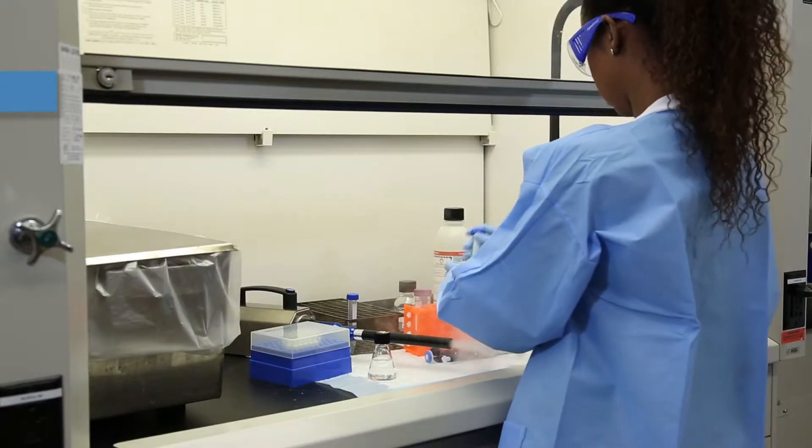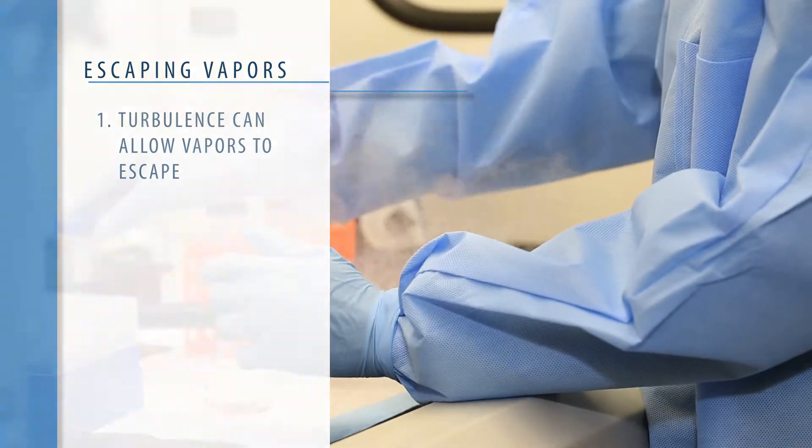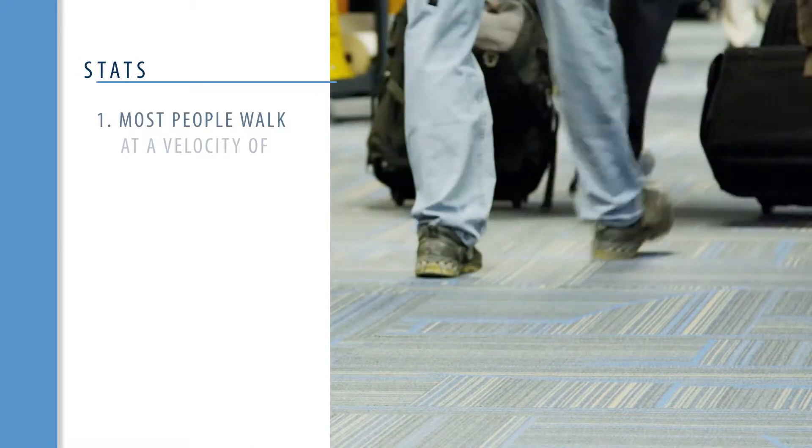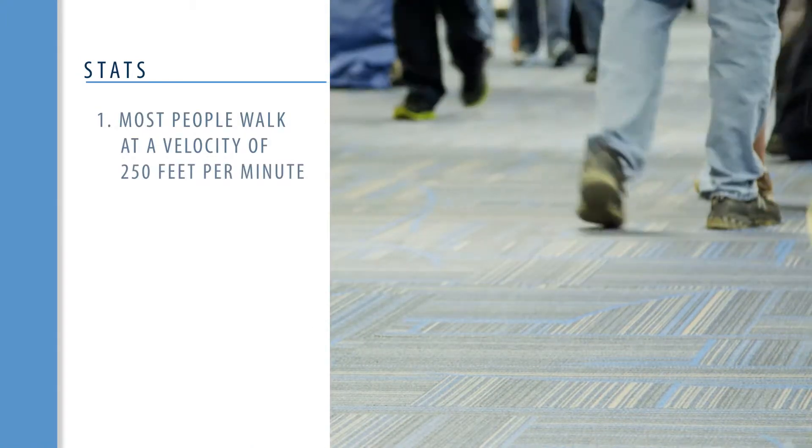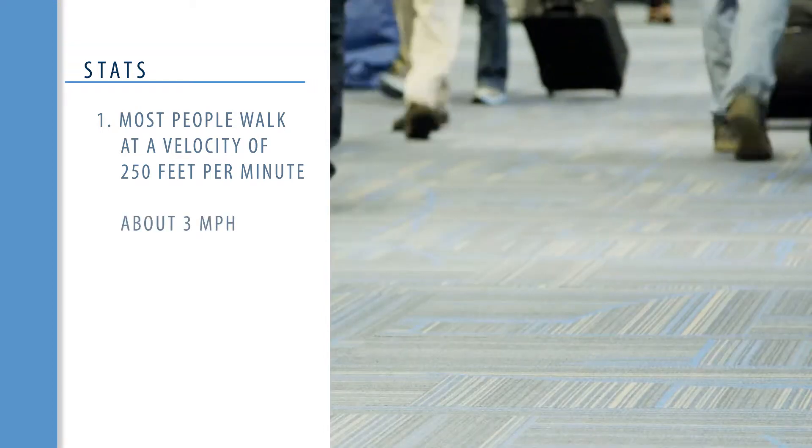Abrupt movements can cause turbulence allowing vapors to escape. For example, most people walk at a velocity of approximately 250 feet per minute, about 3 miles per hour.